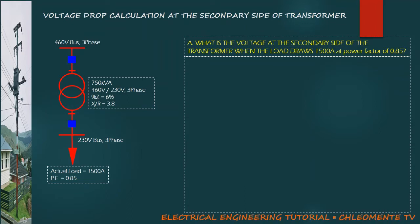In this example, we have a load of 1500 amperes with a power factor of 85%. It is connected with a transformer having 750 kVA rating, 460 to 230 volts, 3 phase. The given transformer impedance voltage is 6% with X over R ratio of 3.8.